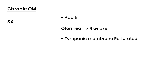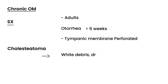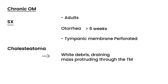One very significant thing that can occur with chronic otitis media is the development of something called cholesteatoma. When this happens, what's essentially going on is that you have white debris detected on physical exam, and also a draining mass that's protruding through the tympanic membrane. This will cause ongoing recurrent otitis media in an adult.